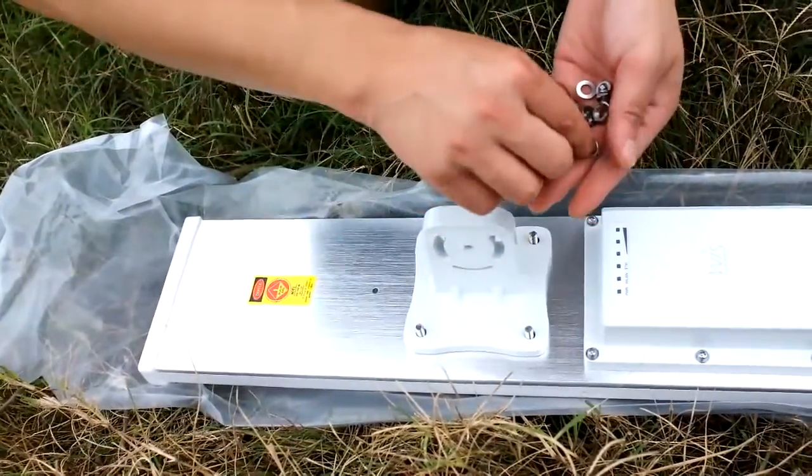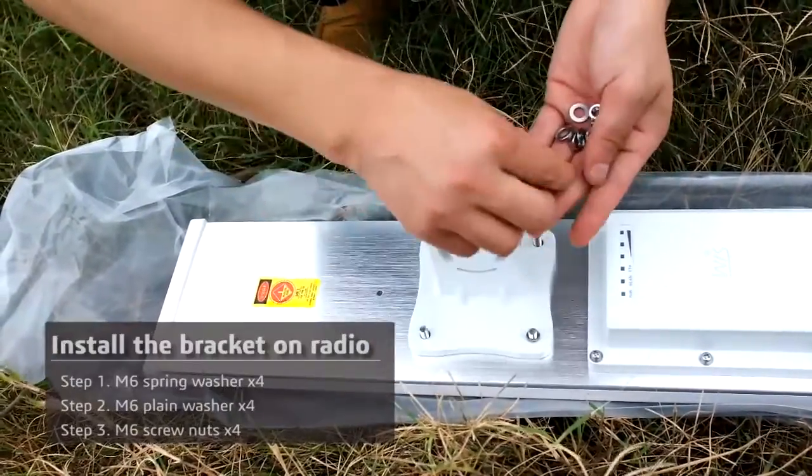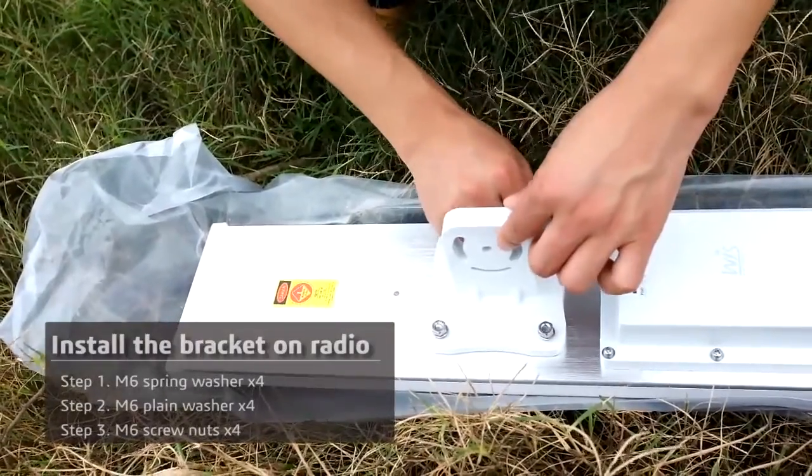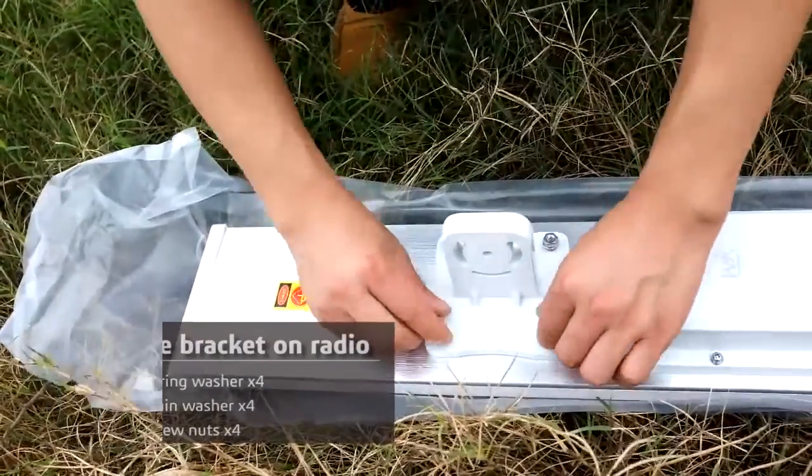First, put the bracket correctly over the four fixed screw bolts on the radio as shown in the video. In this step, the mounting direction of the bracket is very important and can only be installed with this direction.